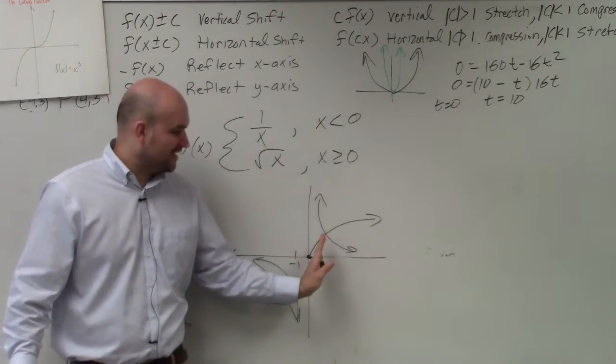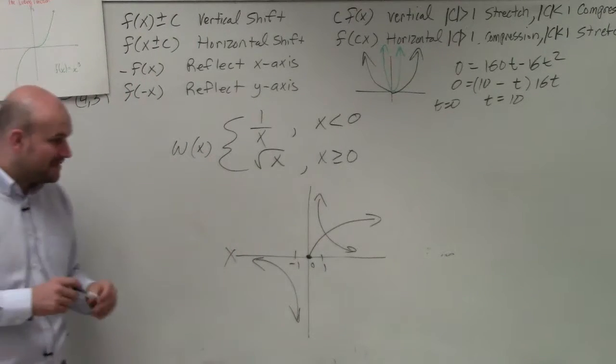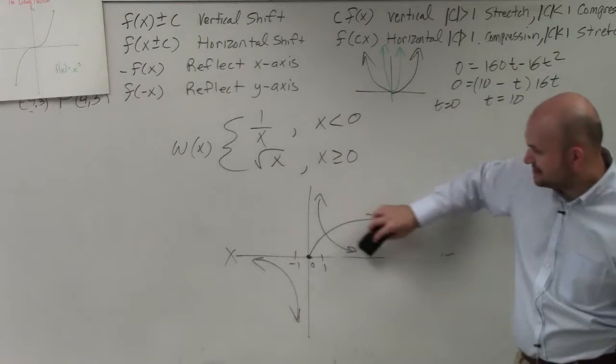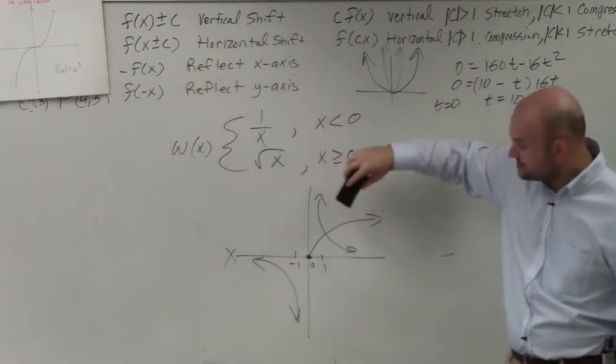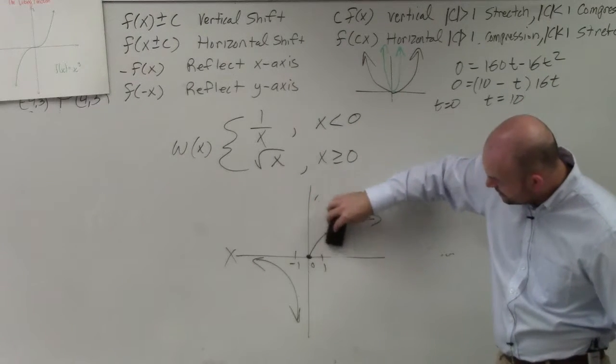So that's going to be all x values to the left of the y-axis, correct? So that means this 1 over x function, this portion of it, is not within my constraints. So I'm just going to erase what I kind of drew.